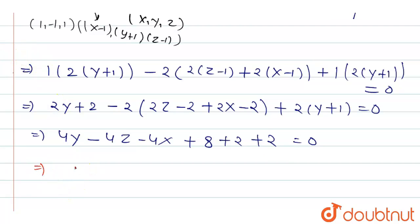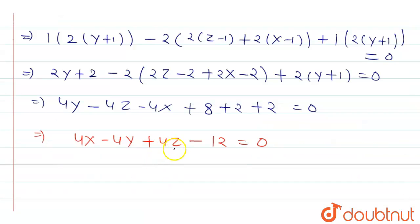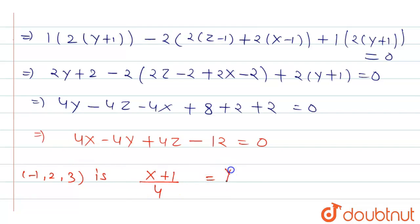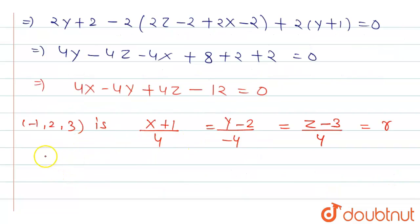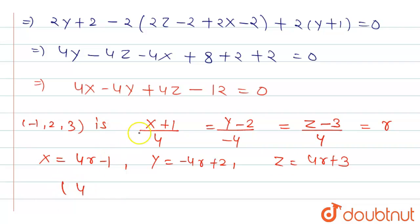The equation of the plane simplifies to: -4x - 4y + 4z - 12 = 0, or equivalently x + y - z + 3 = 0. The given point is (-1, 2, 3). The line through this point perpendicular to the plane has direction ratios (4, -4, 4) — the coefficients of the plane. In parametric form: (x+1)/4 = (y-2)/(-4) = (z-3)/4 = r. So x = 4r - 1, y = -4r + 2, z = 4r + 3.